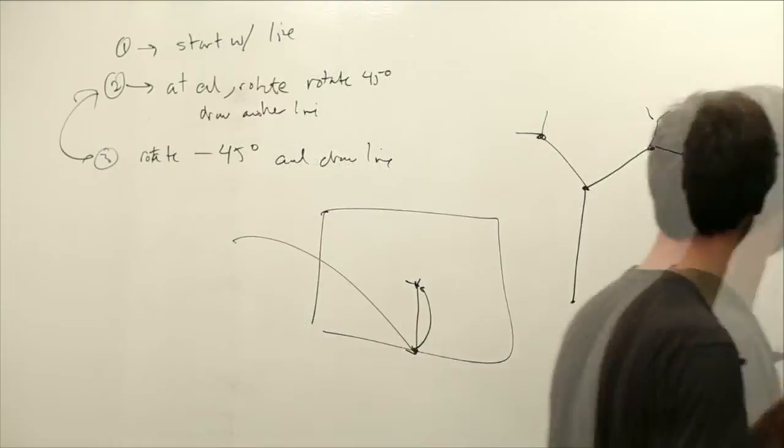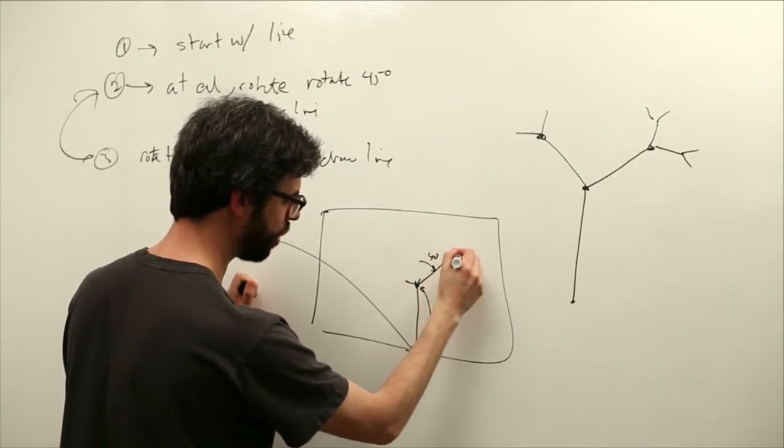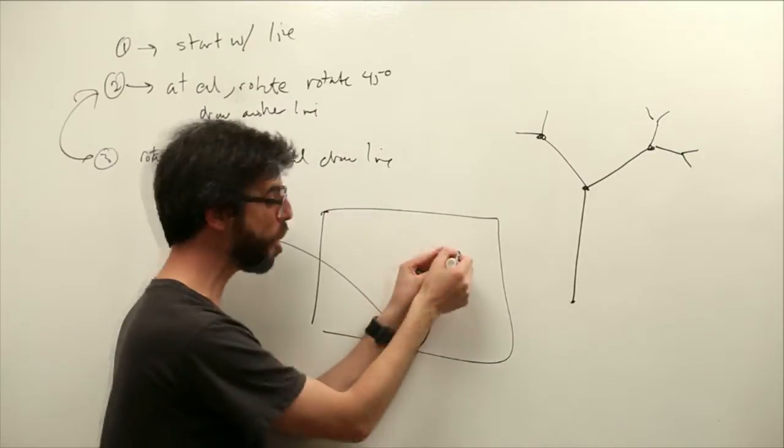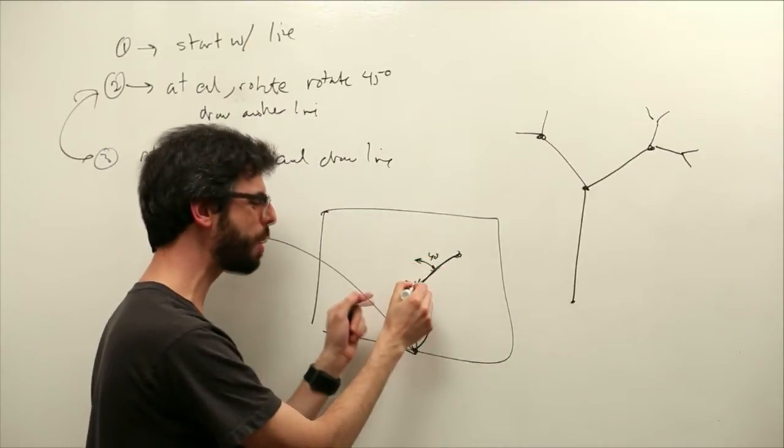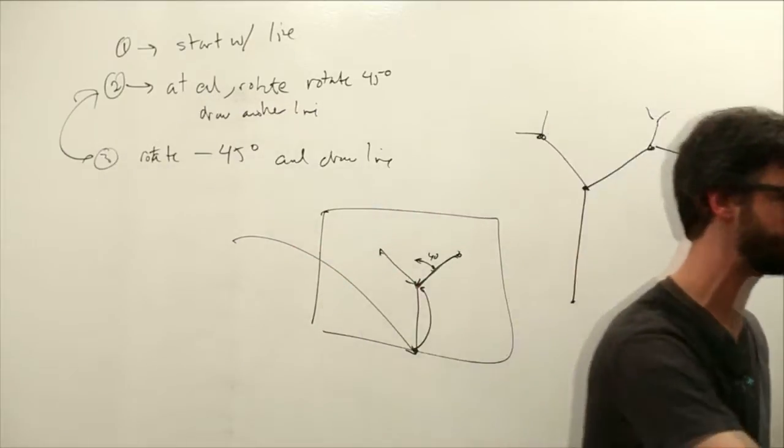Because what did we do? We rotated 45 degrees and drew this line, and then we rotated back 45 degrees. But really what we want to do is rotate, then pop back to where we were originally, and then rotate the other direction. This is where we can use push matrix and pop matrix.